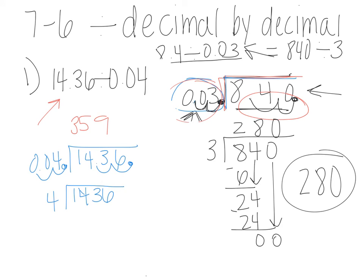4 goes into 14 three times because that's 12. 4 goes into 23 five times that's 20. So 3 left, bring down my 6 and 4 goes into 36 nine times. That's how I got 359.